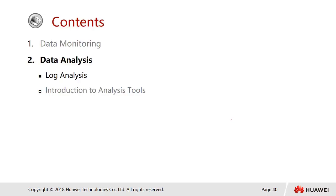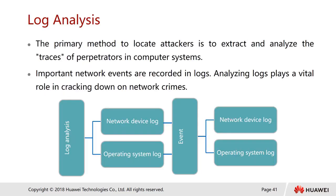That is data monitoring — how we collect information. Once we have all the information, such as logs, the next step is log analysis. Log analysis is the primary method to locate an attacker: we extract and analyze the trace of the perpetrator in the computer system. Important network events are recorded in the logs.